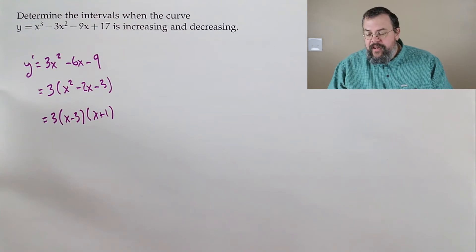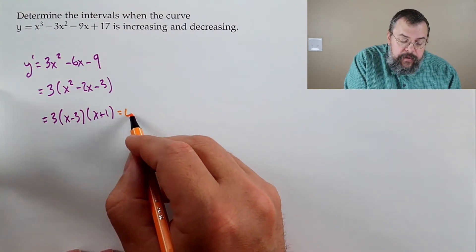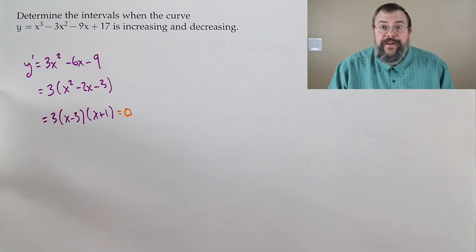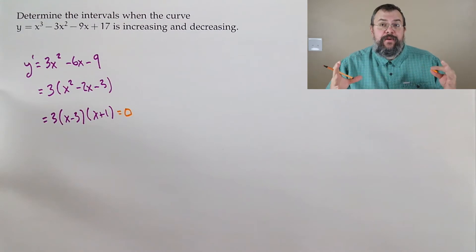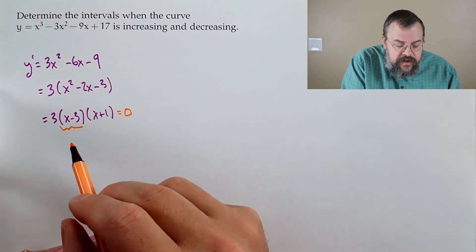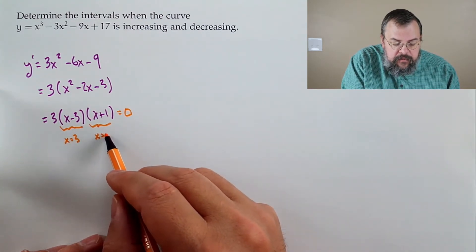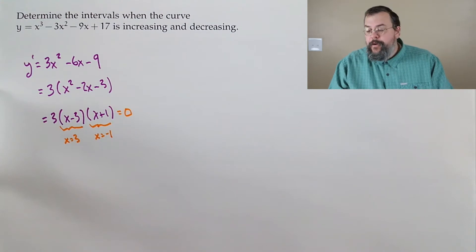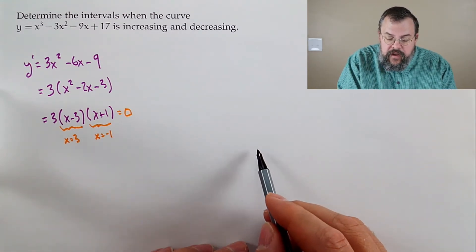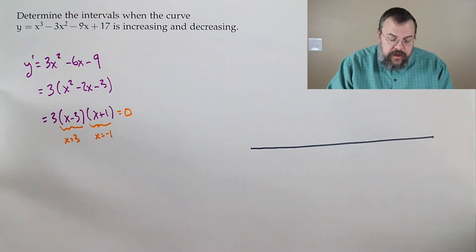We're after our critical points, so we ask when does this equal zero. That's why we're factoring — when I have a product of things equal to zero, I just have to say when does each piece equal zero. x minus 3 equals zero at x equals 3; x plus 1 equals zero at x equals negative 1. Now we know where our critical points are, which means we can draw our number line and mark our points at 3 and negative 1.